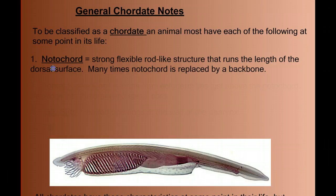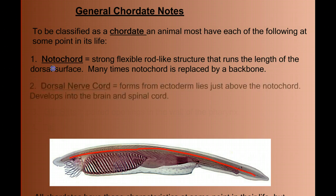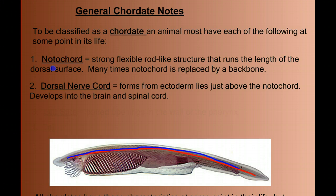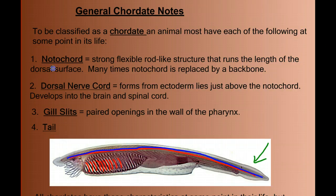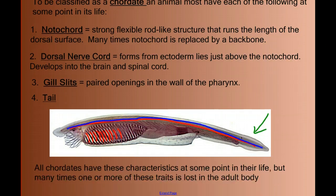First, a notochord — a structural rod that runs down its dorsal surface to give the animal structural support. Second, a hollow dorsal nerve cord that runs behind and dorsal to the notochord; it's formed from ectoderm and will give rise to the nervous system, the brain and the spinal cord. Third, all chordates have, at some point, paired gill slits in the pharynx, across which gas exchange or filter feeding can occur. And finally, the fourth chordate characteristic is that all chordates, at some point during their development, have a tail. This defines the phylum.